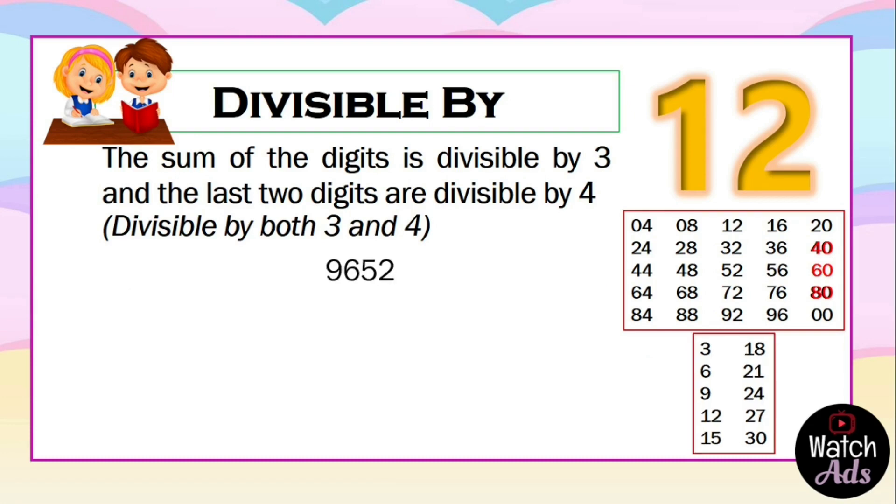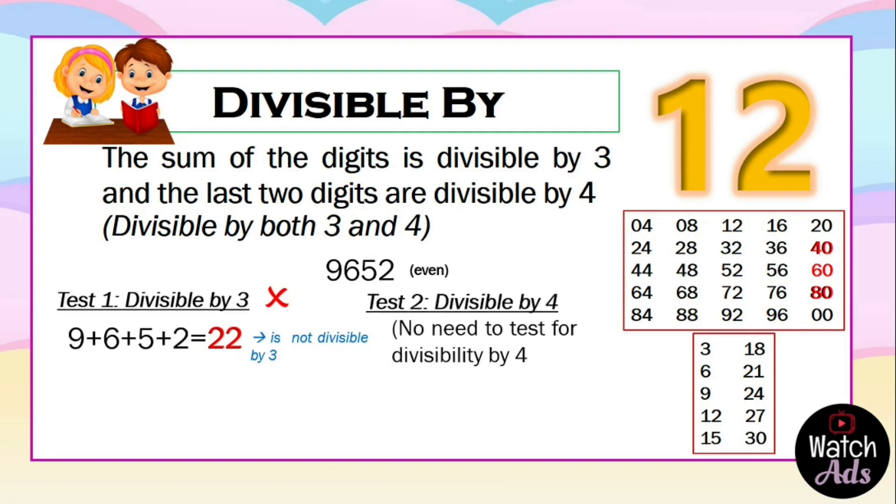Another example: 9652. First, we check if the number is even. Yes, it is. Let's have our first test: is the number divisible by 3? We add the digits, the answer is 22. 22 is not divisible by 3.